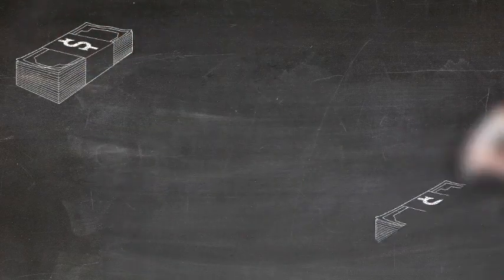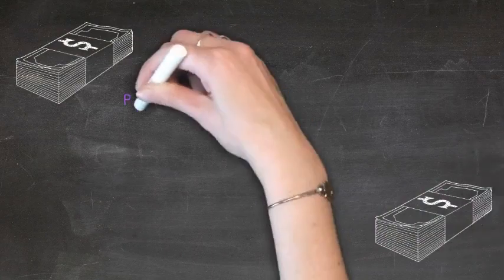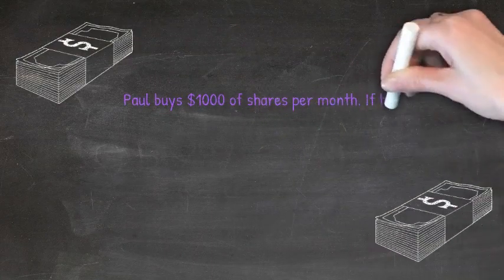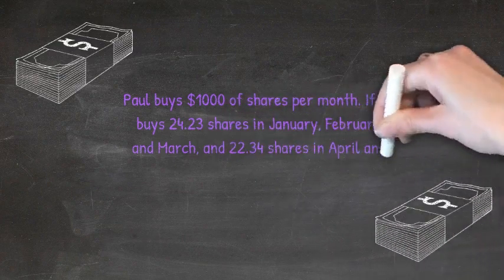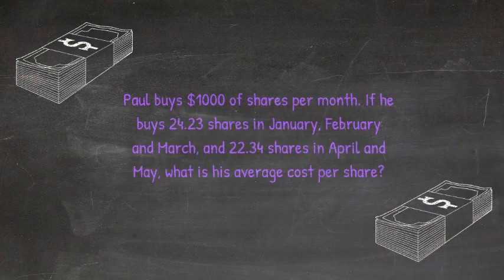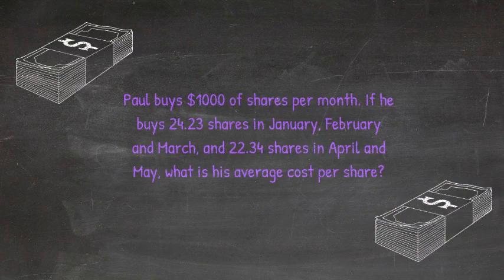Paul buys $1,000 worth of shares every month. He buys 24.23 shares in January, February, and March, and 22.34 shares in April and May. What is his average cost per share?